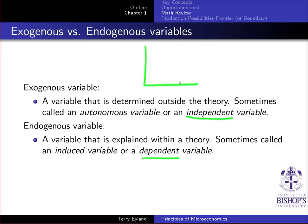On a graph, up here we have the dependent variable and down here the independent variable. What is an independent variable? An independent variable, or an exogenous variable, is a variable that is taken as given — it's determined outside of the theory. We're not determining it; it's just there. That's just the amount of whatever good is available.